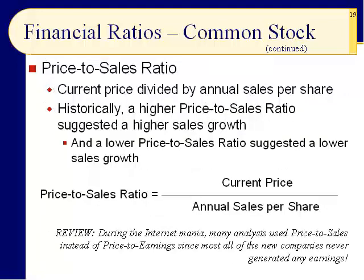Slide 19: the last common stock ratio is the price-to-sales ratio. During the internet mania, many analysts used price-to-sales instead of price-to-earnings since most new companies never generated any earnings. So these are all review except for the PEG ratio. In our next presentation, we're going to look at new ratios and do some calculations, so have the Ford balance sheet and income statement available to pick out numbers and make comparisons. We'll see you in the next presentation for Chapter 17. Study hard, dear students — bring honor and glory to Southwestern College.